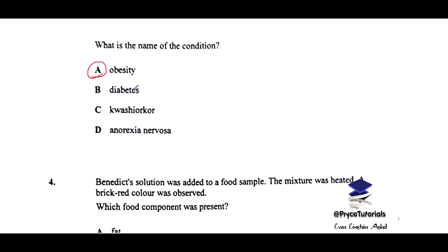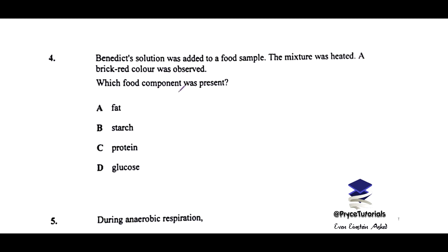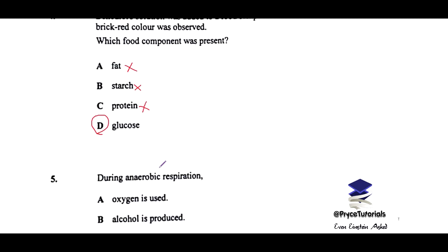Number four: the same Benedict solution was added to a food sample, the mixture was heated, a brick red color was observed. Which food component was present? So for the food component present here, this one is out. Do we test starch with Benedict solution? It's an obvious no as well. Do we test protein with Benedict solution? No, we use biuret. But glucose, yes, we use Benedict solution. Glucose, these are reducing sugars, so you want to choose D.